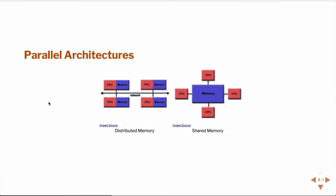There are different types of parallel architectures. The most common is distributed memory — the most common form factor for a supercomputer. This is where you have a collection of nodes, each representing a node with a CPU and memory. When we're talking about memory here, we're talking about RAM — random access memory — not hard disk space.